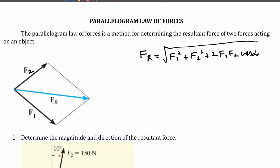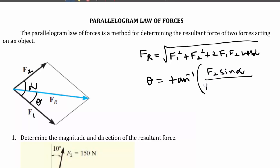Here F1 is the first force, F2 is the second force, and alpha is the inclination between the two forces. To locate the inclination between F1 and FR, I am marking it as theta. The equation for theta is: θ = tan⁻¹(F2·sin α / (F1 + F2·cos α)).